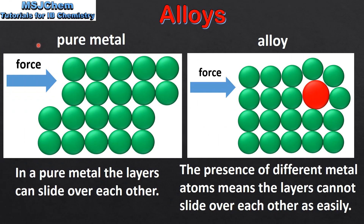In a pure metal, when a force is applied, the layers can slide over each other. In an alloy, when a force is applied, the presence of different metal atoms means the layers cannot slide over each other as easily. This makes the alloy less malleable and stronger.